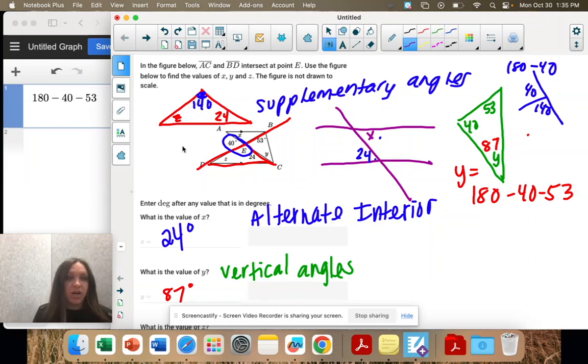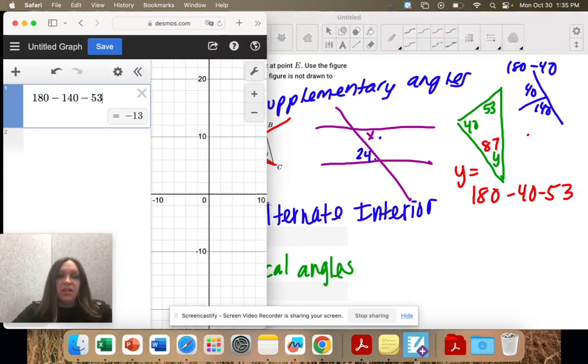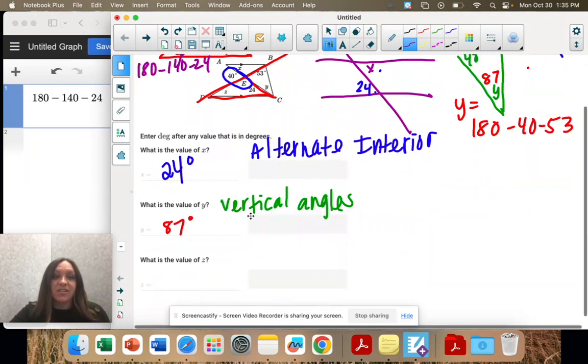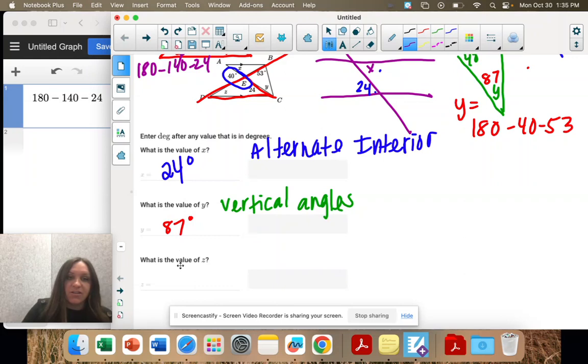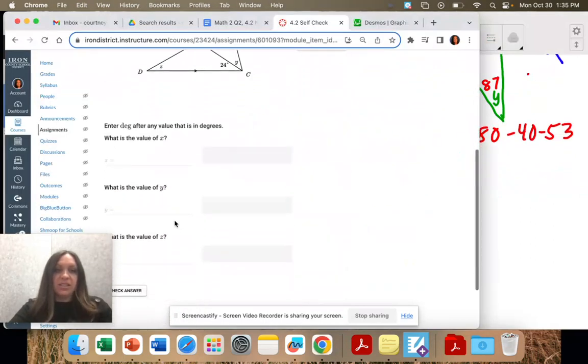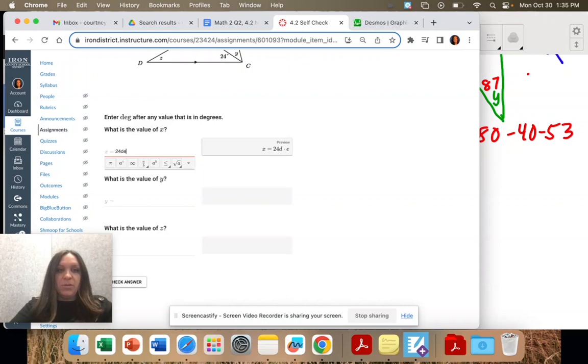Okay, and now it's the same process. Once we have a triangle, we take 180 minus 140 minus 24, and that's going to give us Z, which is just 16. So that's why it says in the instructions, figure is not drawn to scale. Okay, because that does not look like 16 degrees. Okay, so 24, 87, 16. And I'm going to put deg, that does the degree.